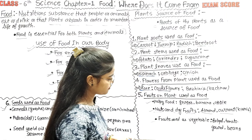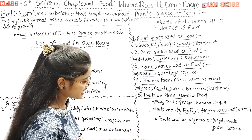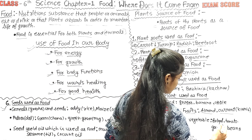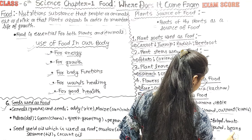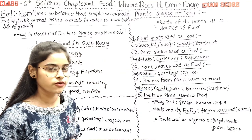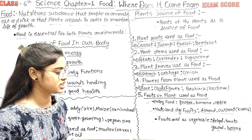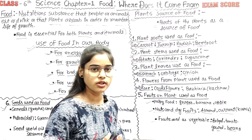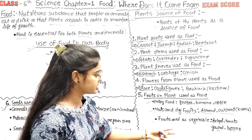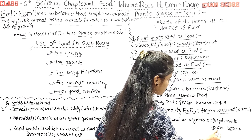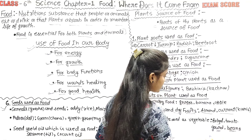The third type is fruits used as vegetables, such as brinjal, tomato, bottle gourd, and beans. There are many vegetables we eat in food, such as tomatoes, brinjal, bottle gourd, and beans.